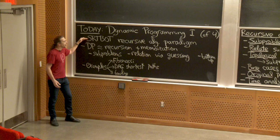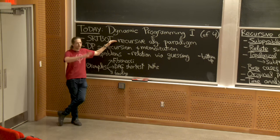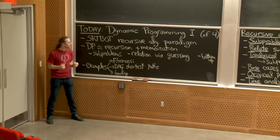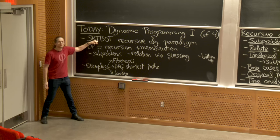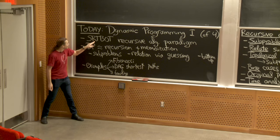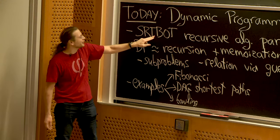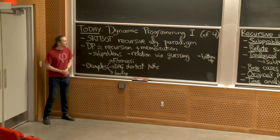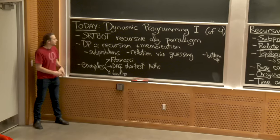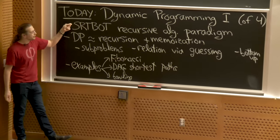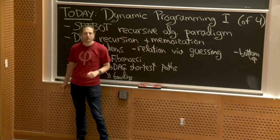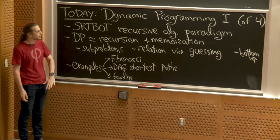We're going to start with how to design recursive algorithms in general. We have a cool acronym called SORTBOT: Subproblems, Relations, Topological order, Base case, Original problem, and Time. Dynamic programming builds on this template by adding one new idea called memoization — just the idea of reusing work that you've done before — and that's going to let us solve tons of problems.